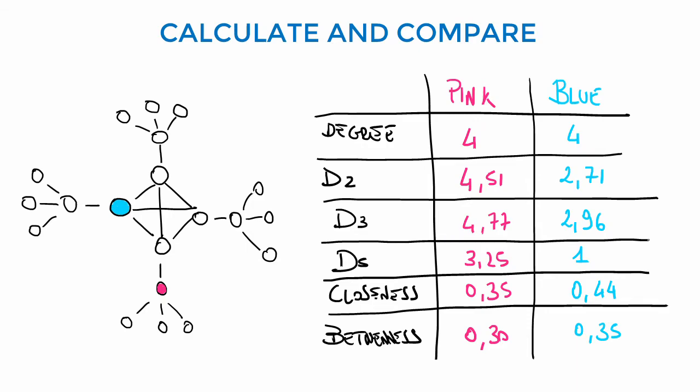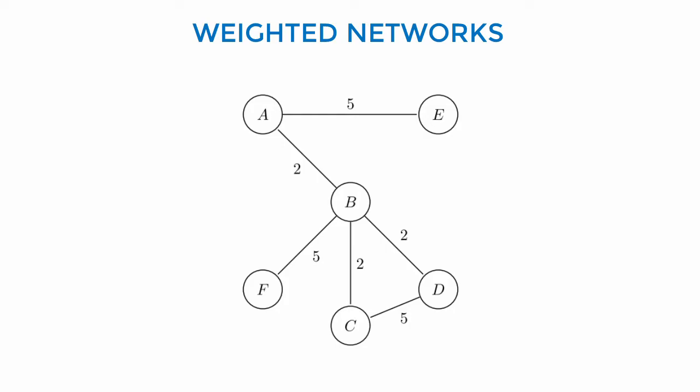On the other hand, closeness and betweenness say the opposite. This analysis can be generalized to weighted networks. Here we can see, also intuitively, that node B is very important.